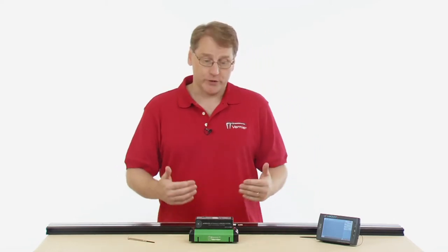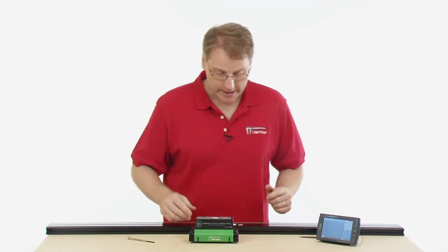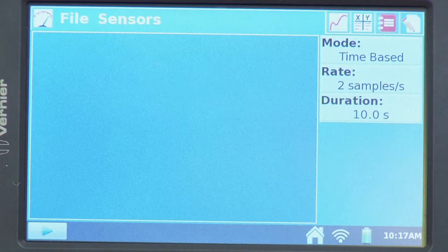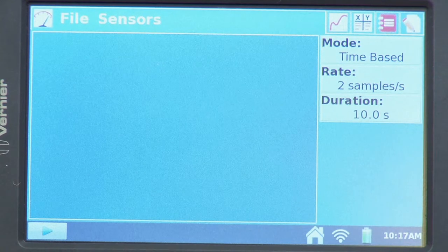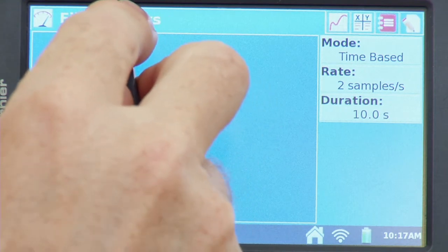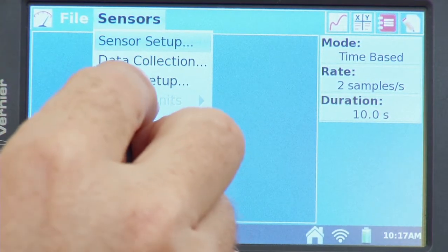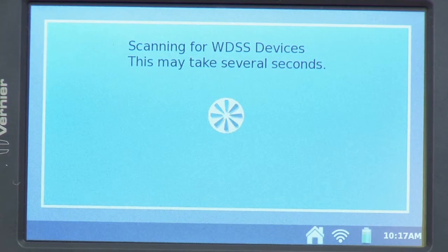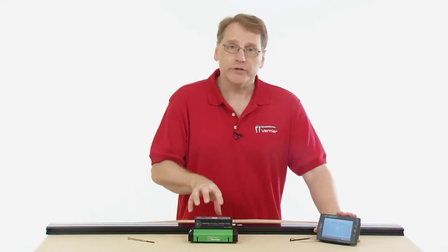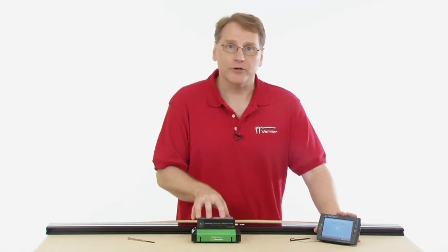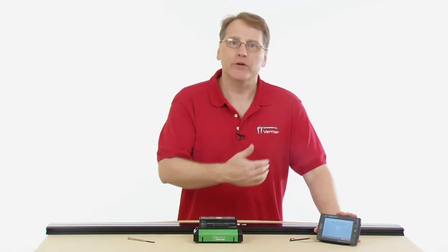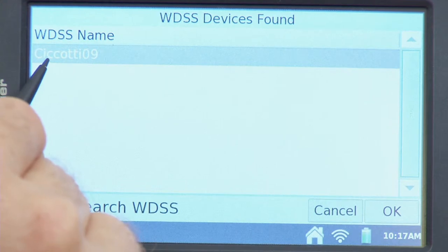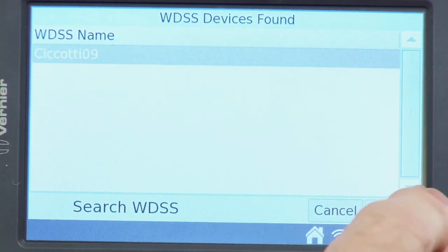Now we're ready to have it communicate with the LabQuest 2. I need to have it detect the sensor. We notice right now that we are on the meter screen without any sensor attached. I'm going to go up to Sensors, and there's a WDSS setup. Right now, it's looking for a device. I'm going to hit Scan for Device. It's looking for a Bluetooth device. They are named, so when you have multiple devices, you can look for a particular one. It found it here. So I'm just going to say OK. Now it's found the device.